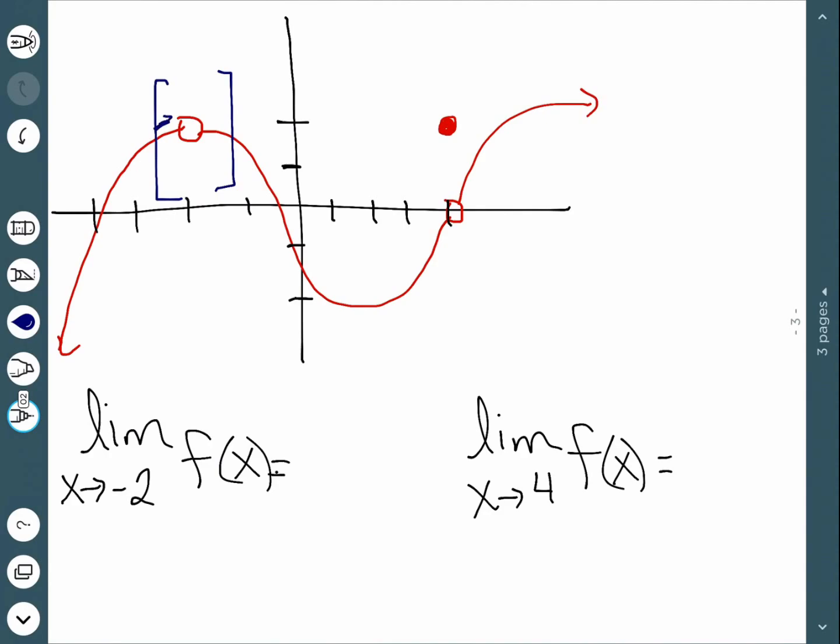We'll notice as we're getting closer and closer to negative 2, the y direction is getting closer and closer to the number 2. And this is exactly what the limit is. Even though our function is actually not defined at negative 2, we are able to find the limit. We want to know what happens close to it.